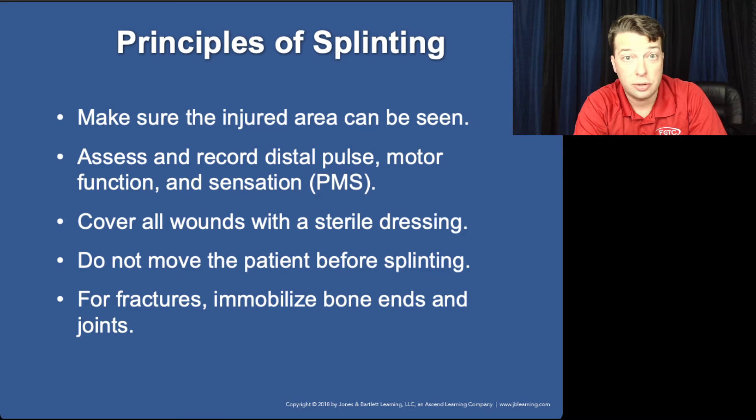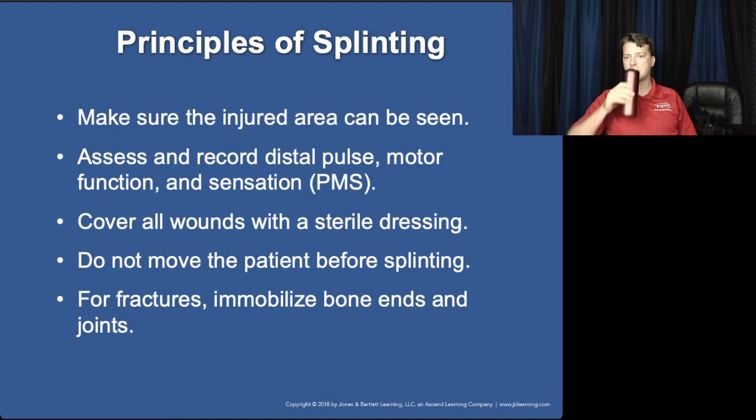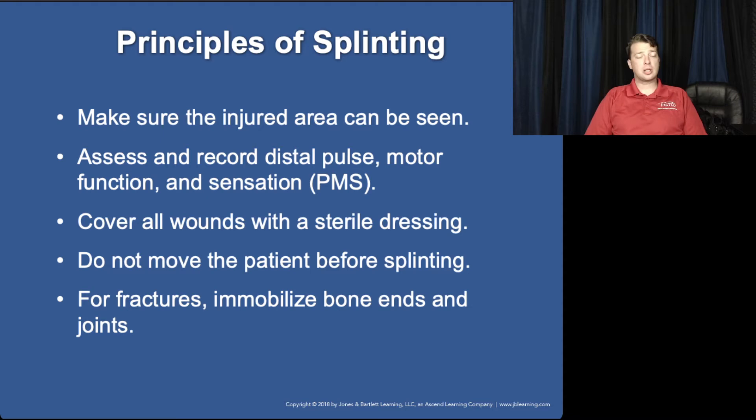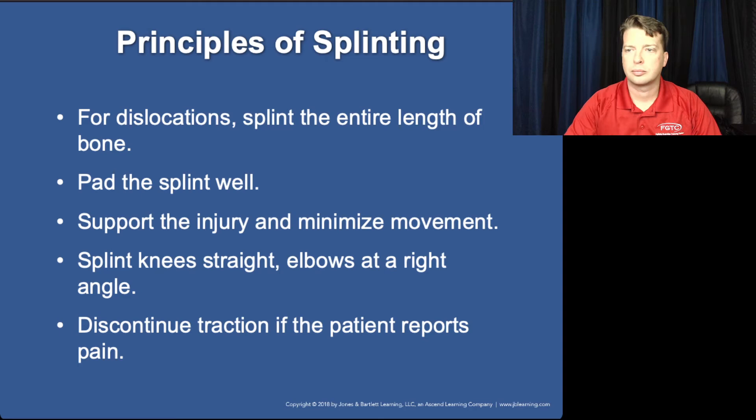Make sure that you assess pulse, motor, and sensory function before and after splinting. Any wounds should be covered before splinting. If your patient has an isolated extremity trauma, don't move them before you splint — splint immediately. However, if your patient is dealing with multiple system trauma and multiple injuries, then splinting becomes a very low priority. You're not going to delay treatment or transport because you're trying to splint an ankle fracture.